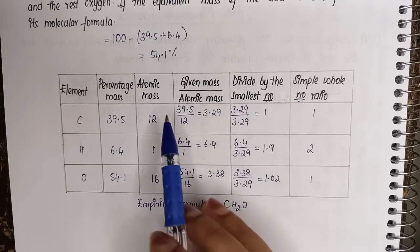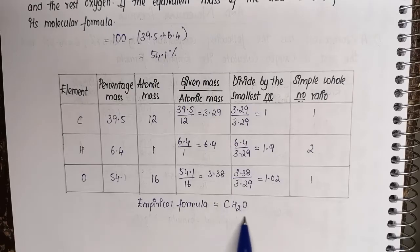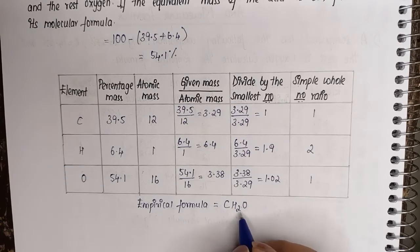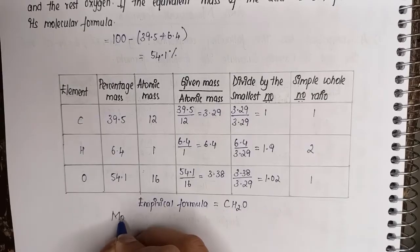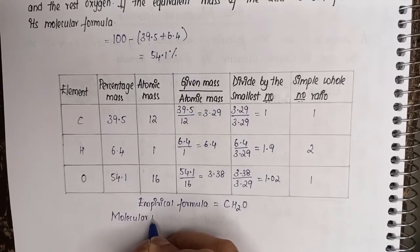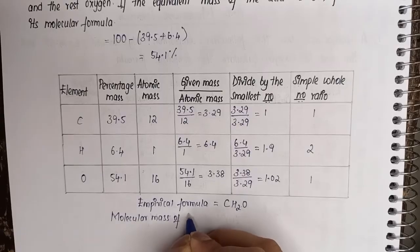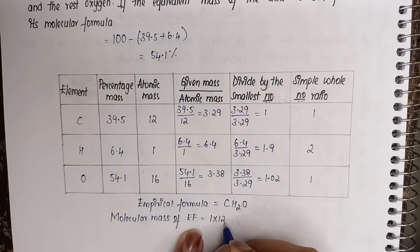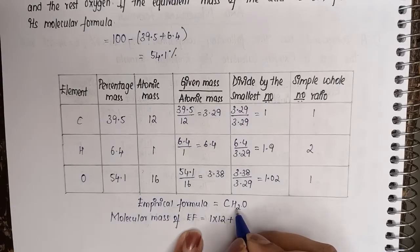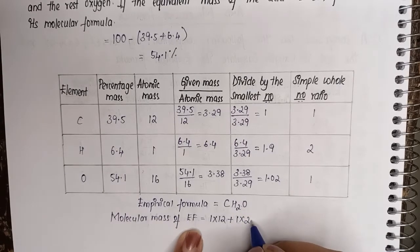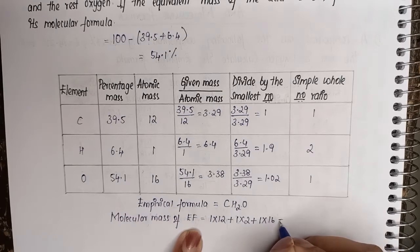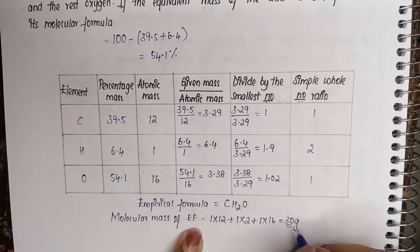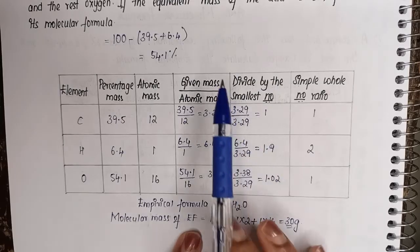So the empirical formula ratio gives us C₁H₂O₁, meaning the empirical formula is CH₂O. Now to find the molecular formula, we need the molecular mass of this empirical formula. That is: 1 carbon atom × 12 + 2 hydrogen atoms × 1 + 1 oxygen atom × 16, which gives a molecular mass of 30 grams per mole.